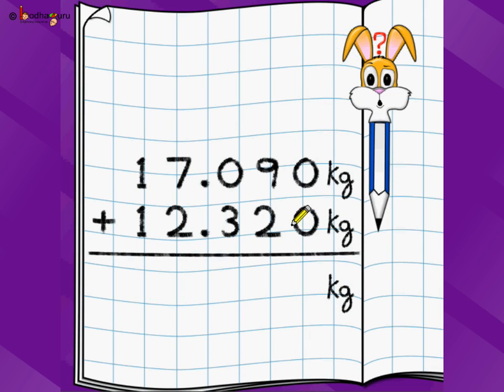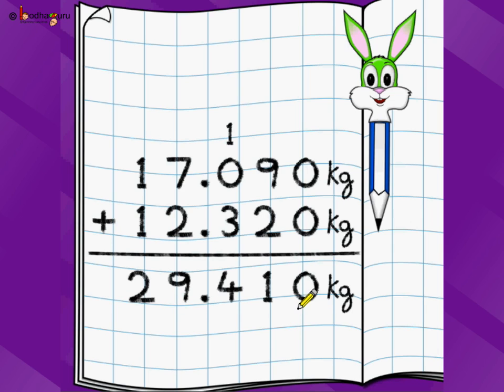Let's take another problem. This is using carry over in the position after the decimal. We have 17.090 kg and then we have 12.320 kg added to it. We just do 0 plus 0 is 0, 9 plus 2 is 11. Same rule of carry over. One goes here, 1 plus 3 is 4, 7 plus 2 is 9, 1 plus 1 is 2. We have 29.410 kg with us, or we can say 29 kg and 410 grams.